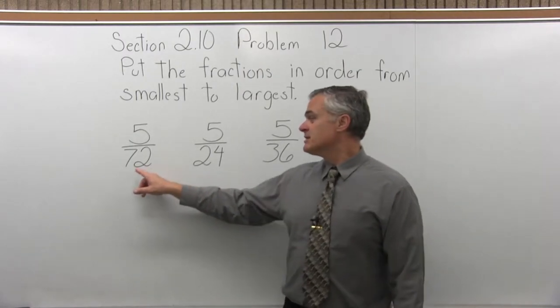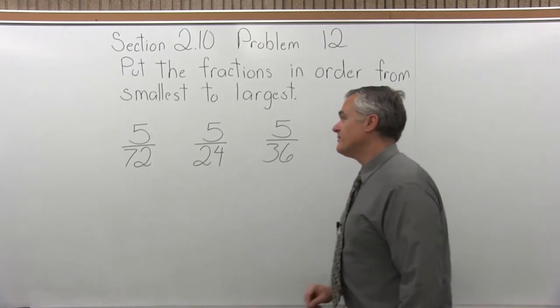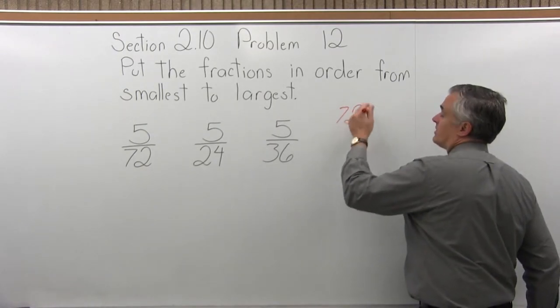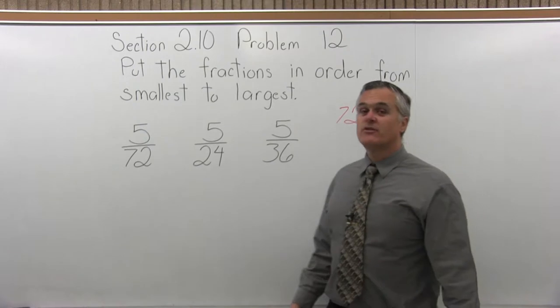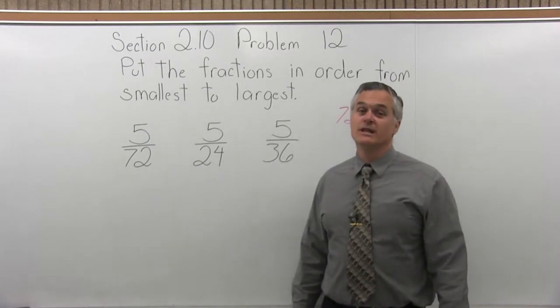So when that happens, go to the largest denominator, which in this problem is 72, and ask yourself, will they all divide into 72 evenly? And actually they will.